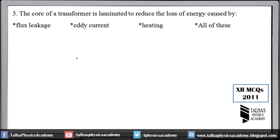Number 3: the core of a transformer is laminated to reduce the loss of energy caused by eddy currents. Remember, lamination is done to reduce energy loss due to eddy currents, which are undesirable currents produced in the core of the transformer. They reduce our energy, so we laminate the transformer so that undesirable currents are not produced.